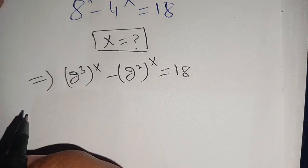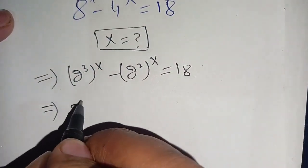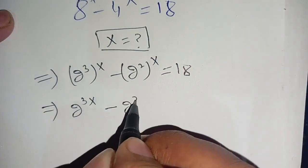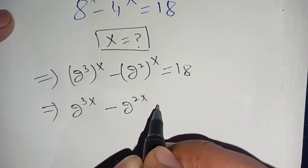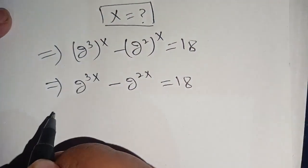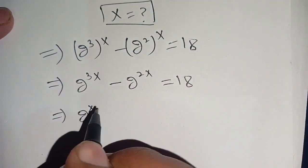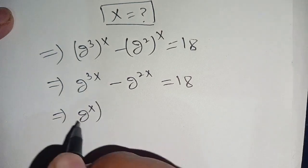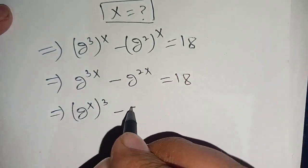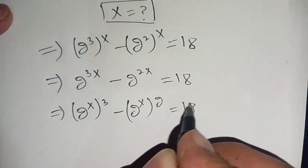In the next step we can write it as 2 to the power 3x minus 2 to the power 2x is equal to 18, or we can write it as (2^x)^3 minus (2^x)^2 is equal to 18.